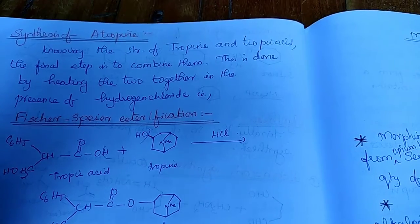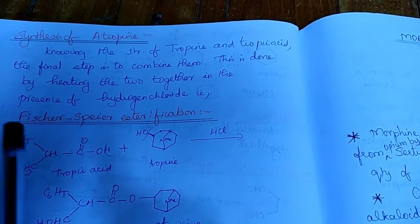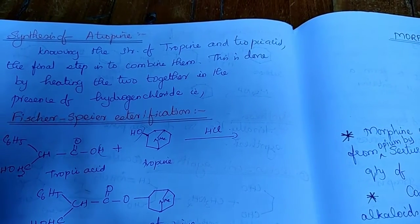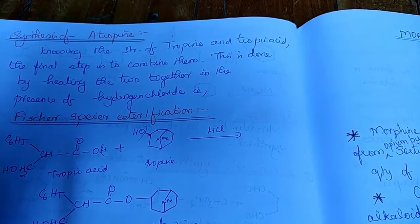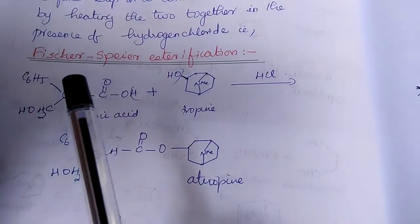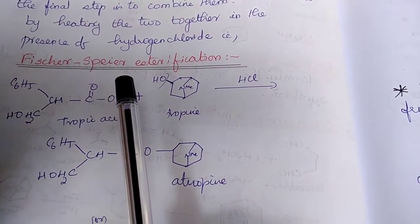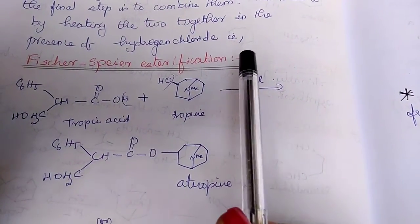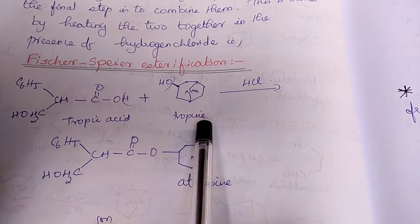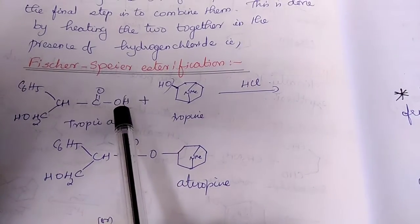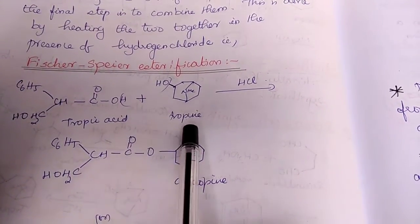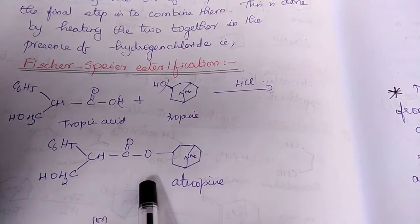Now, finally, the structure of atropine can be determined by its synthesis. We know the structure of tropine and tropic acid. Now, the final step is condensing both of them. As we know, tropic acid is an acid and tropine is an alcohol. It is a simple esterification reaction. So, the H and OH is gone as water and now an ester is formed in the presence of HCl which is atropine.